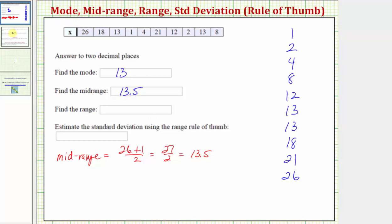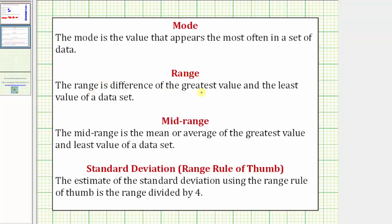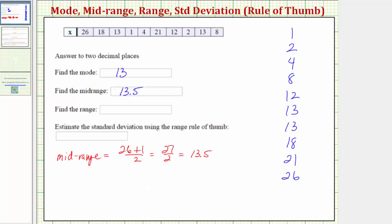Next we'll find the range where the range is the difference of the greatest value and the least value of the data set. So the range equals the greatest value minus the least value. So for our data set the range is equal to 26 minus 1 which equals 25.